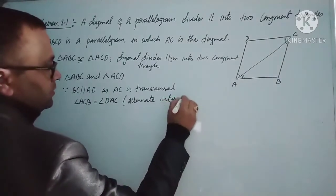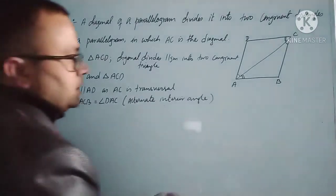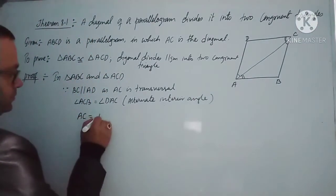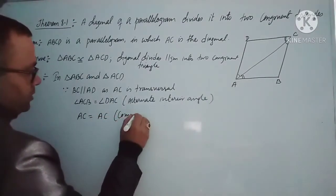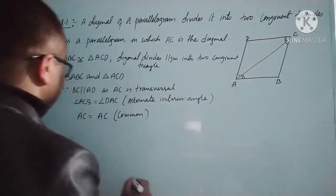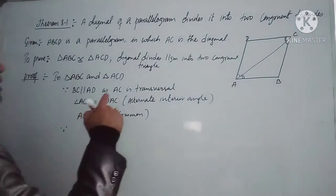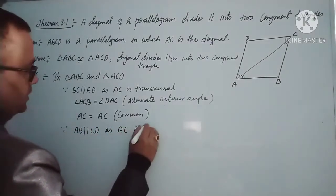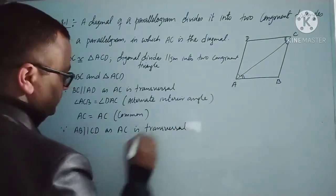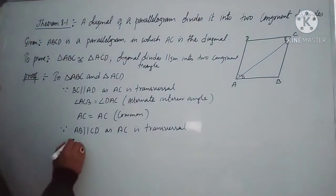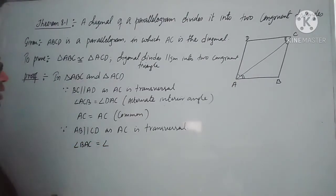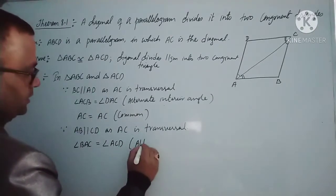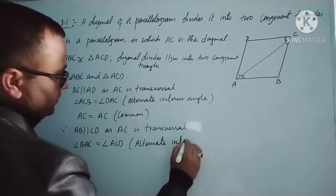Next, AC equals AC — it is common for both triangles. And since AB is parallel to CD, with AC as the transversal, we can write angle BAC equals angle ACD. The reason is alternate interior angle.